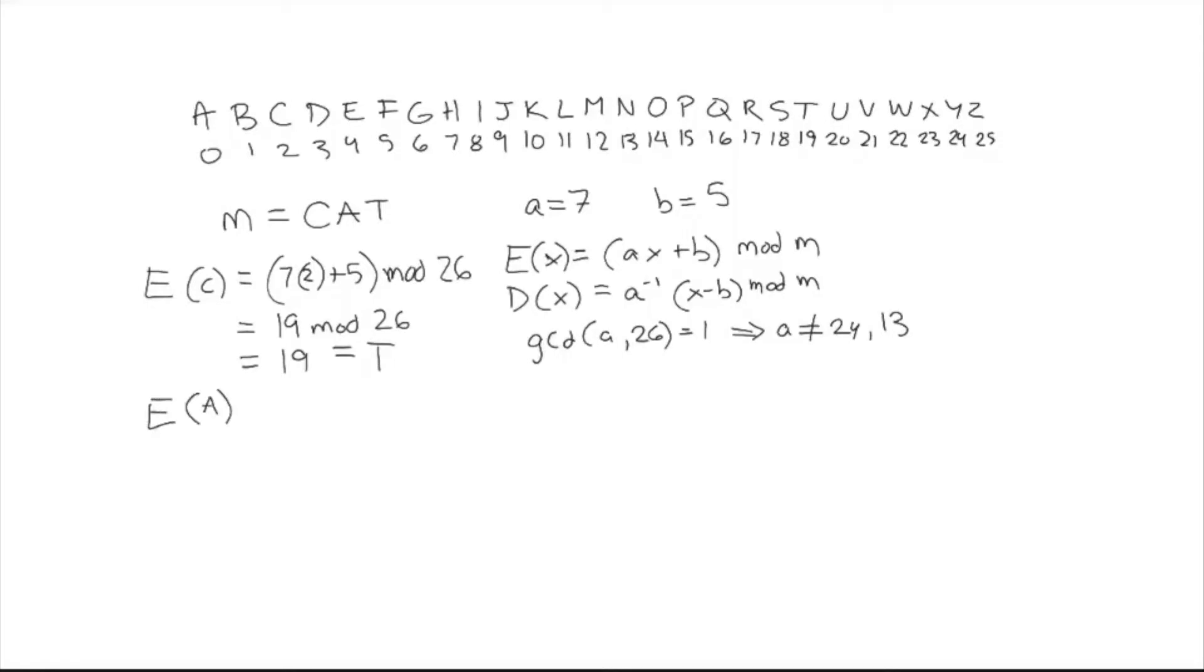So next we're going to encrypt the a in cat. So we're going to get the formula 7 times 0 plus 5 mod 26, which is 5 mod 26, which is just 5, which according to our chart is f.